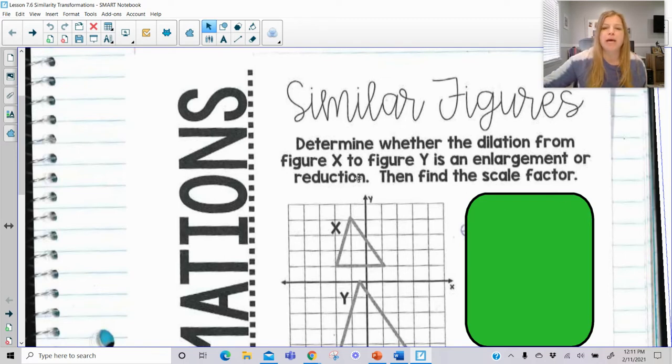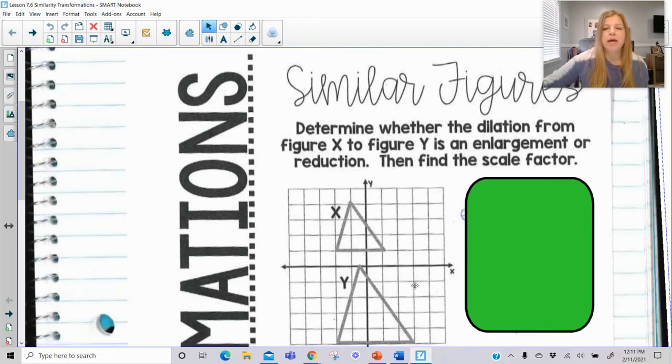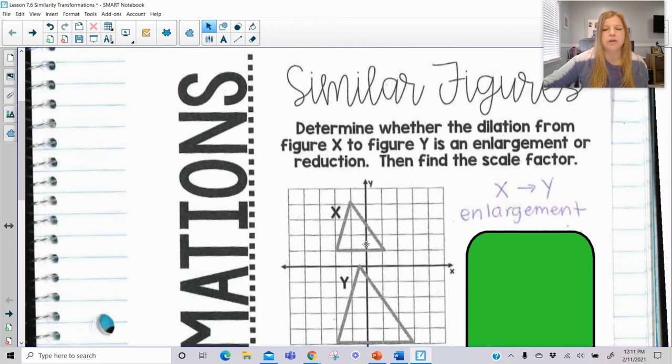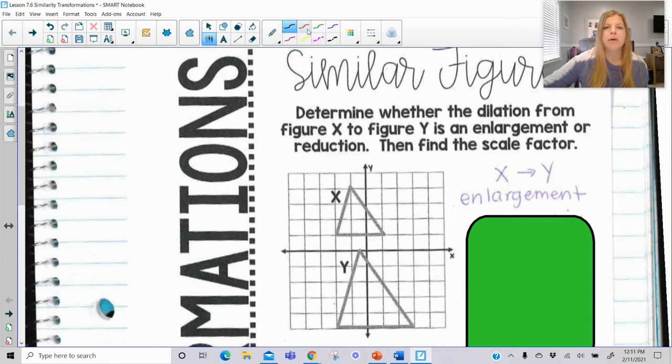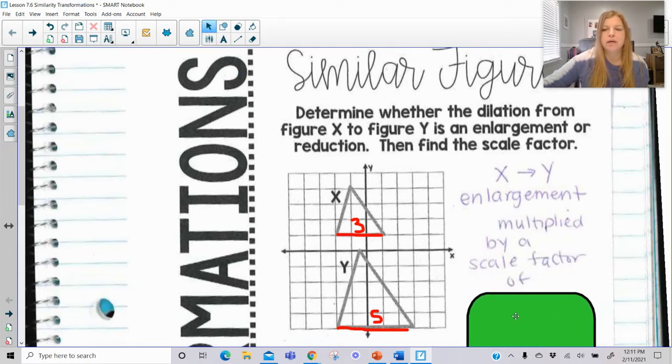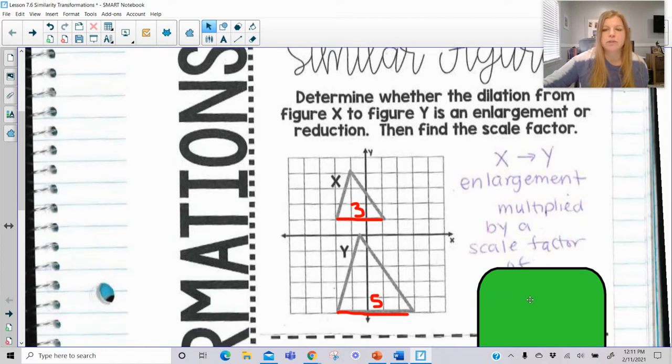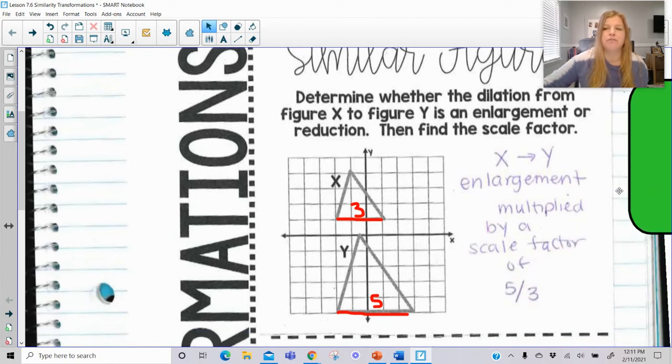From X to Y, we're going to figure out whether it's an enlargement or reduction. That's going to be obvious - is the figure larger or smaller? And then I'm going to show you how we set up the scale factor. Clearly from X to Y, this is definitely an enlargement. The figure is getting bigger. But when I want to figure out the scale factor, X has a length of 3, Y has a length of 5. So to go from X to Y, I'm multiplying by a scale factor of 5 thirds.